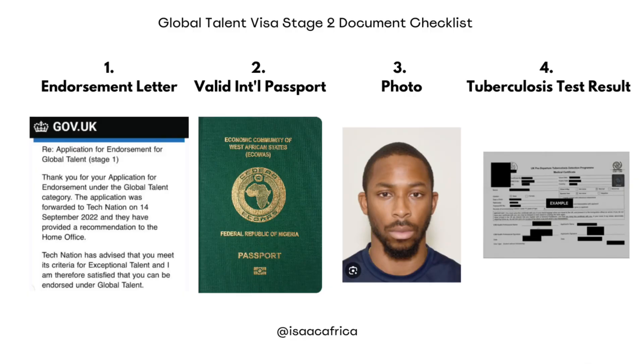Step 2: gather the required documents. Here are the documents you will need for your Global Talent Visa Stage 2 application. Number 1: your endorsement letter — that's the letter you get in your email. Number 2: a valid international passport or other documents that show your identity and nationality. Number 3: a photo. Number 4: your Tuberculosis test result, if you are from a country where you have to take the tests. Your tests must be from a clinic approved by the Home Office. In Nigeria, you can use IOM or other approved clinics. I've added a link to the approved centers in the video description.